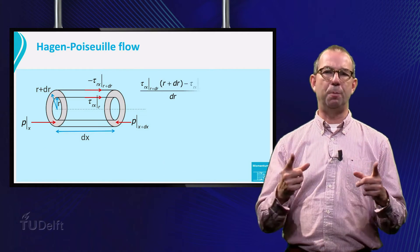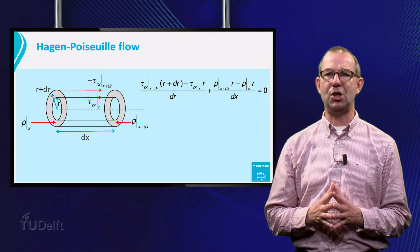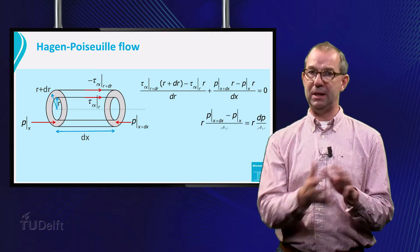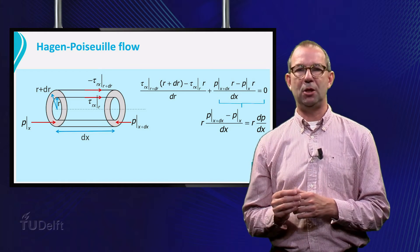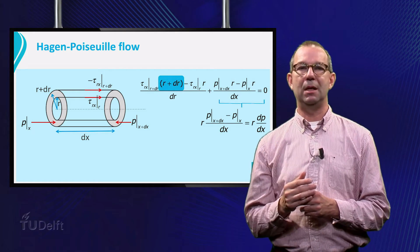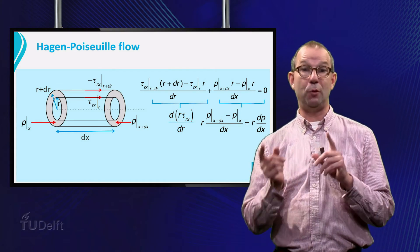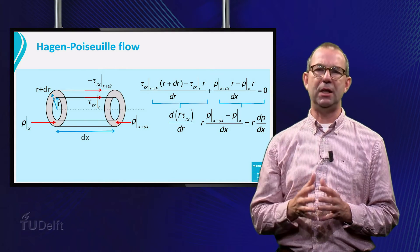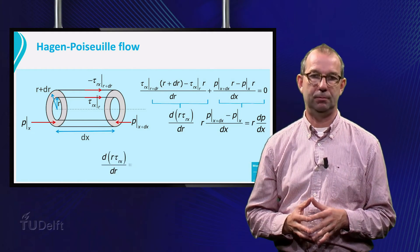We can take out the factor 2 pi, and we can divide by dr dx. If we look at the resulting equation, we see that the pressure terms get grouped, and can be written as r dp dx. The shear stresses are also grouped, but if you look carefully, you will see that one stress is multiplied by r, and the other by r plus dr. Hence it doesn't reduce to r times the derivative of tau, but rather to the derivative of r times tau. If you find this difficult, look up the case of the heated cylinder. There you will see the same features, but now for temperature.